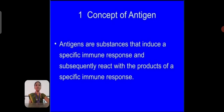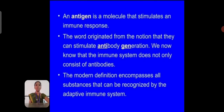What is antigen? An antigen is a molecule that stimulates the immune response. The word originates from the notion that antigens can stimulate antibody generation. We now know the immune system does not only consist of antibodies. The modern definition encompasses all substances that can be recognized by the adaptive immune system.